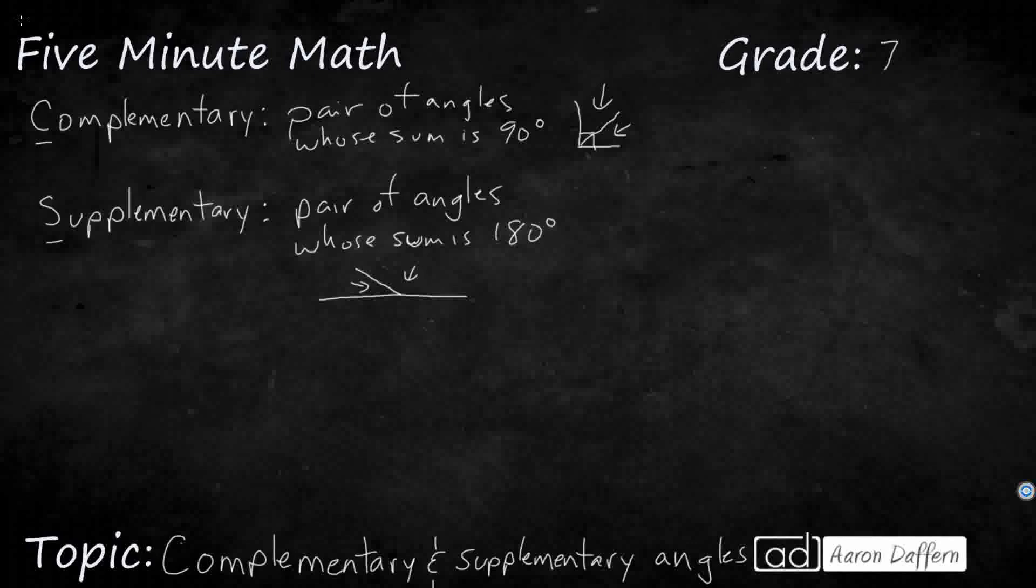And knowing that two angles are complementary and supplementary are very helpful when you're trying to solve for a missing angle value. So we've got an angle here that the large angle is 90 degrees, and we know they're complementary because we've got that square that represents 90 degrees. So we need to find the value of x. Well, how can we do that?